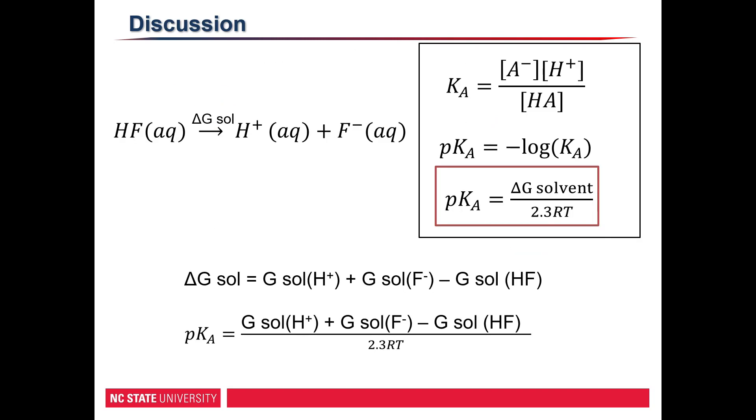However, accurate values can still be acquired by using a simpler format like this one. Here we are simply calculating the delta G for the solution of our acid and its ions. Again, in this we will be using the same value for the proton.